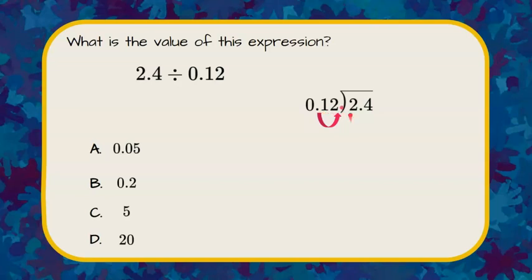When we do this, we also have to treat the dividend the same way. So I need to move this decimal place two spaces to the right, so I'm going to add a 0 and my decimal point, and then my decimal point is going to go straight up into my quotient. So it's really 240 divided by 12.